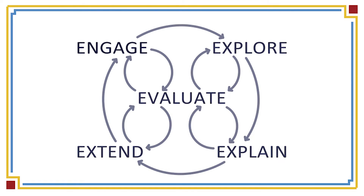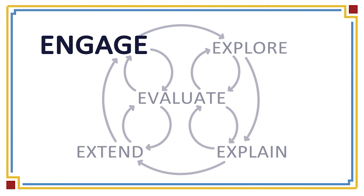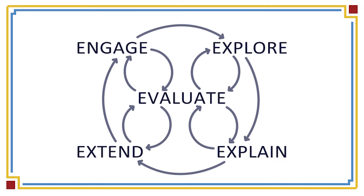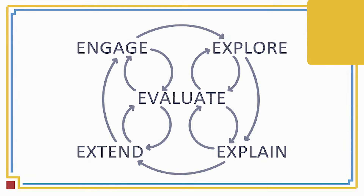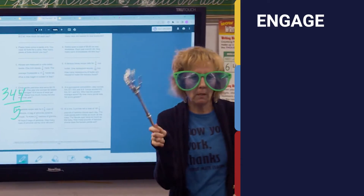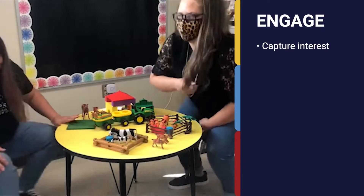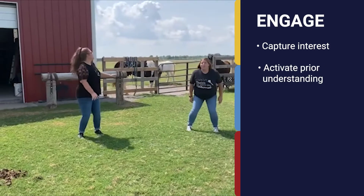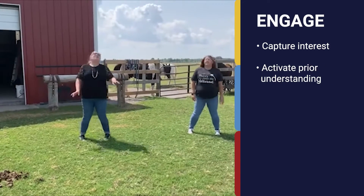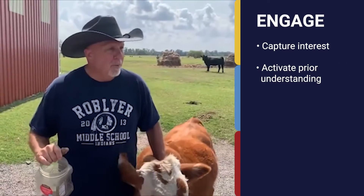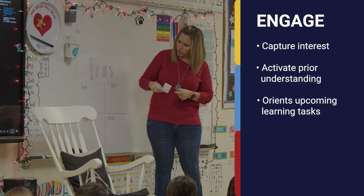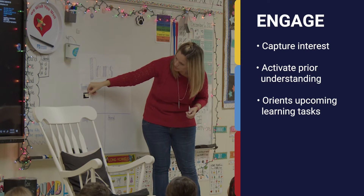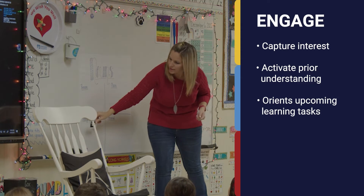The 5E sequence begins with the engage phase. Activities in this phase are designed to mentally engage learners with an event, an idea, or a question. Teachers capture students' interest and bring up an idea or question that's related to something they already know, then connect it to the learning topic. The engage phase also orients students to the learning tasks in the upcoming phases.